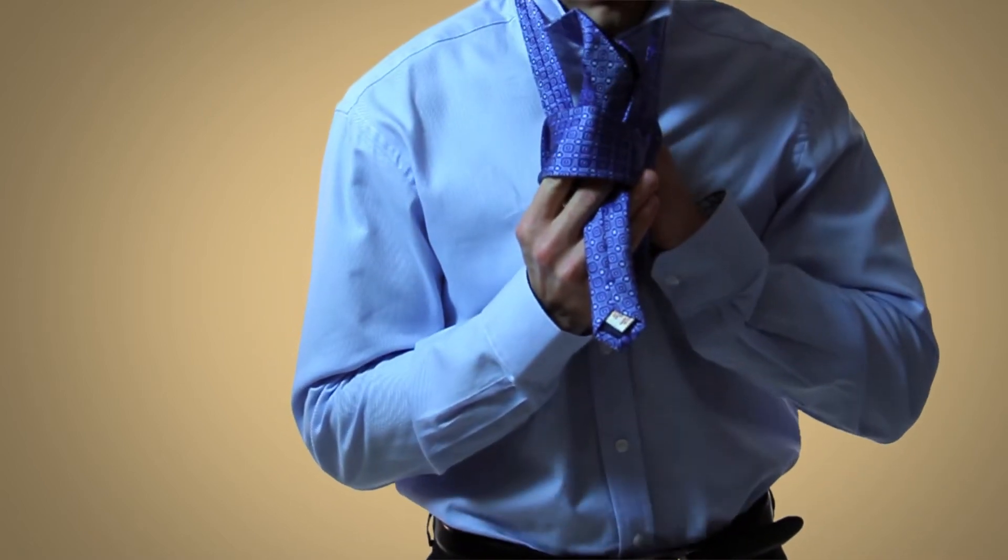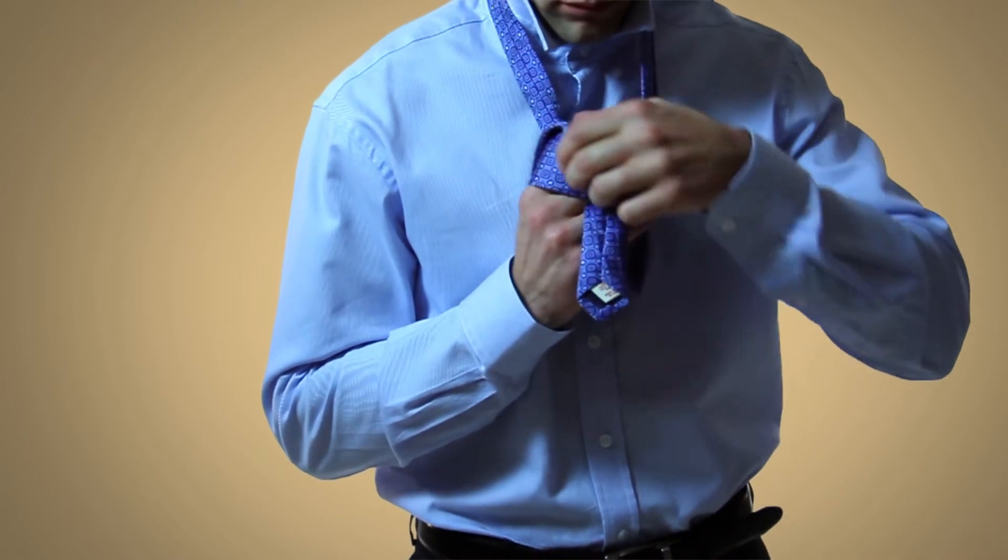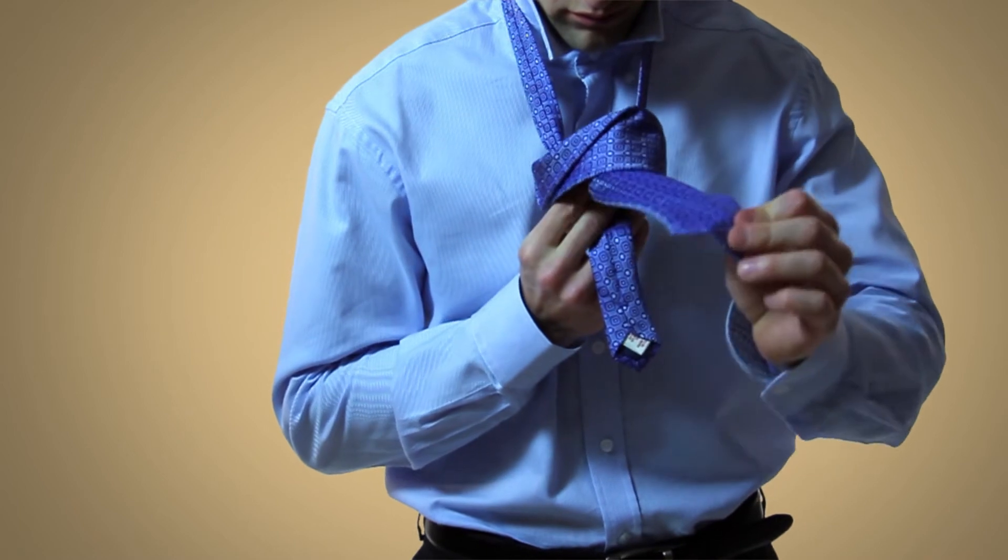Next you'll bring the wide end up through the loop created by your neck and down through the loop that you're holding with your two fingers and then pull the wide end through.